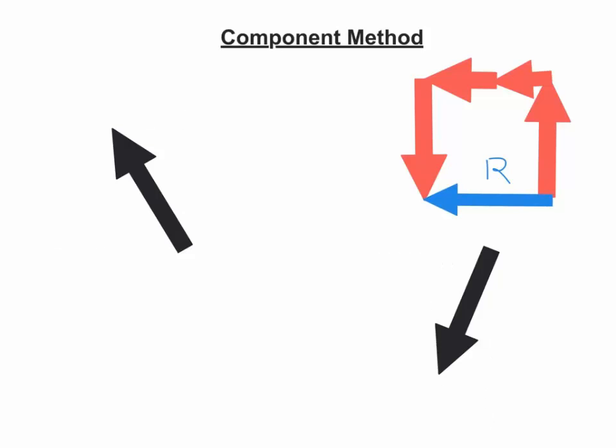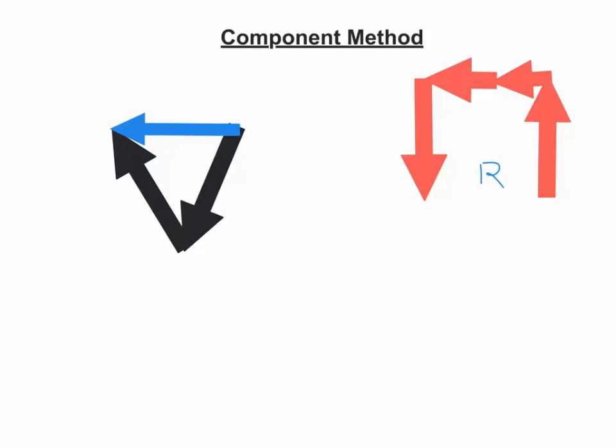And just to double check this, we can take the original two vectors and use an old method that we already knew, like the tip to tail method, and still see that, yeah, it's the same resultant that we would have got with the tip to tail method or the parallelogram method. We just used the component method to break it down into how much is going horizontal and vertical instead.